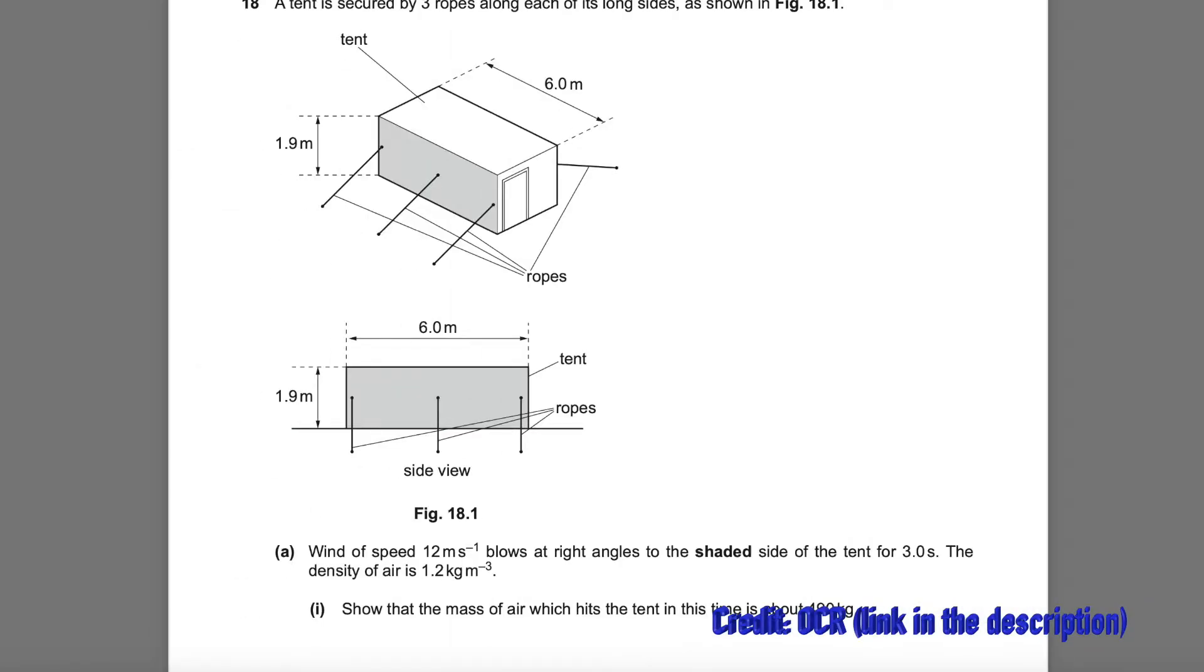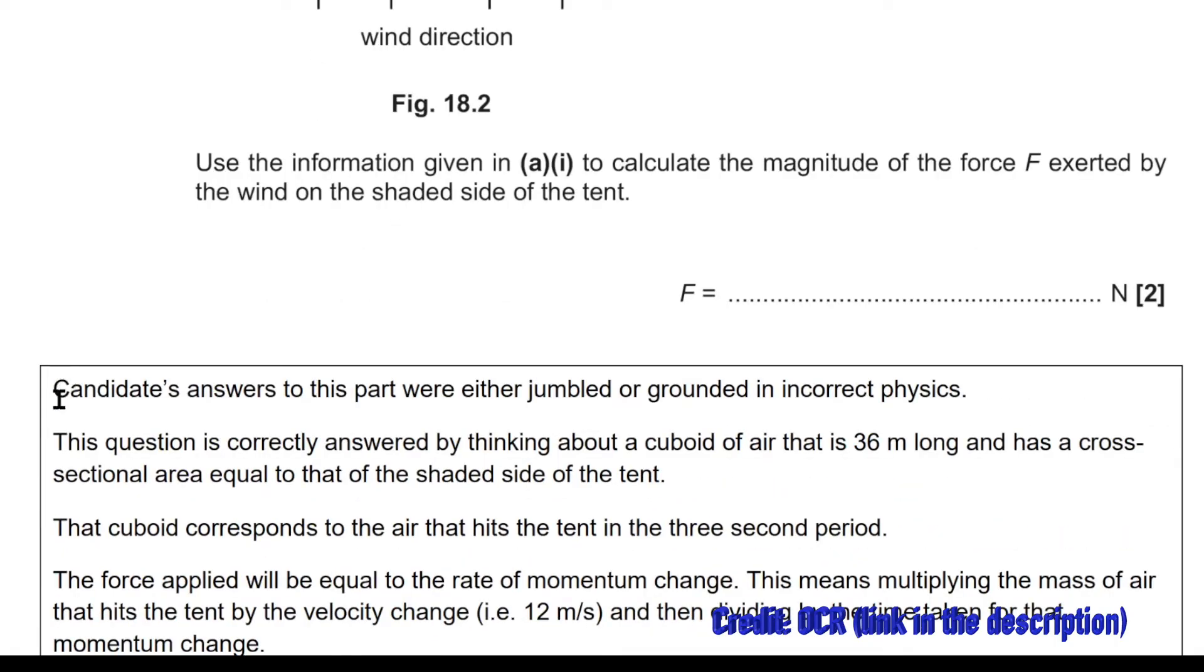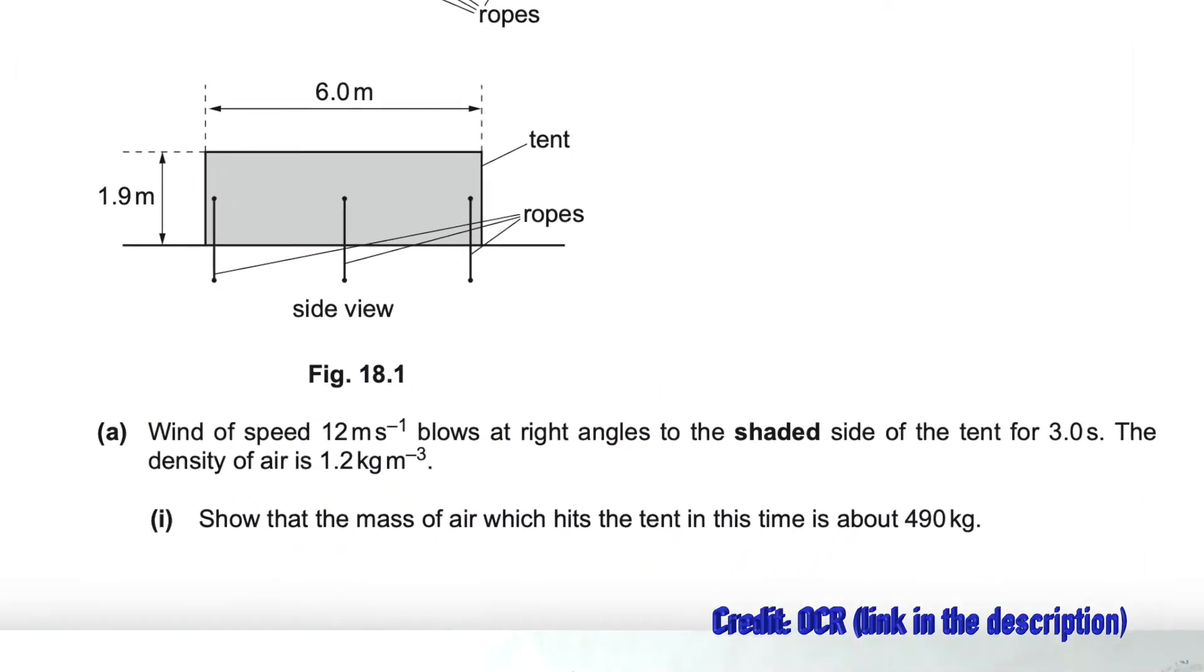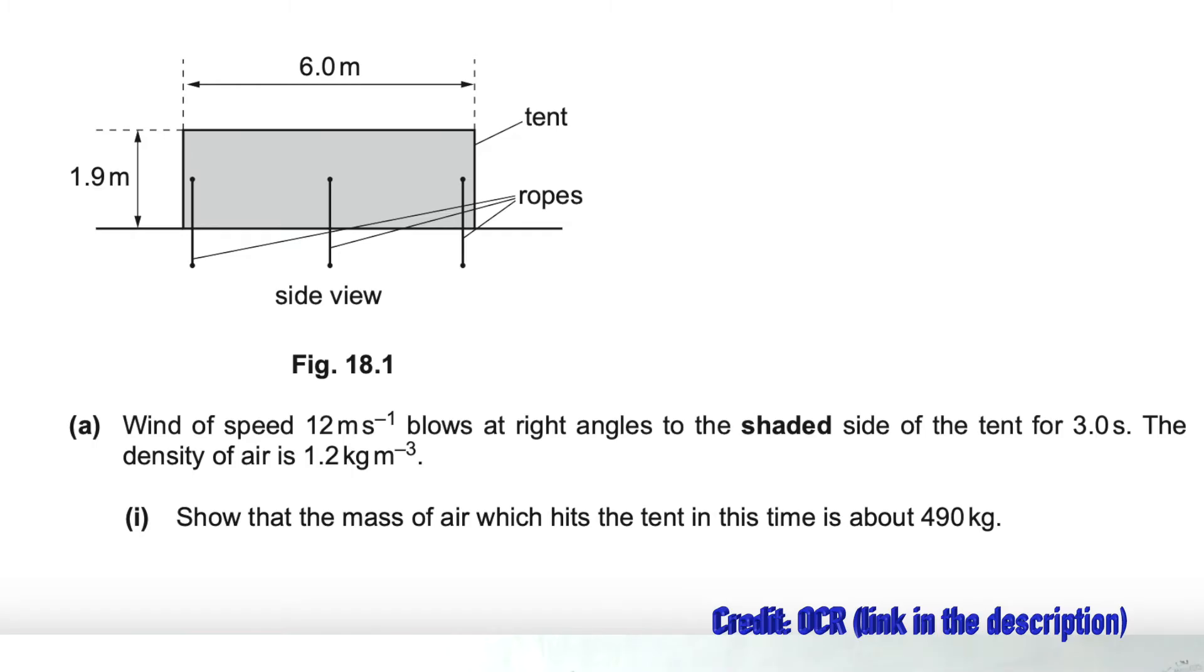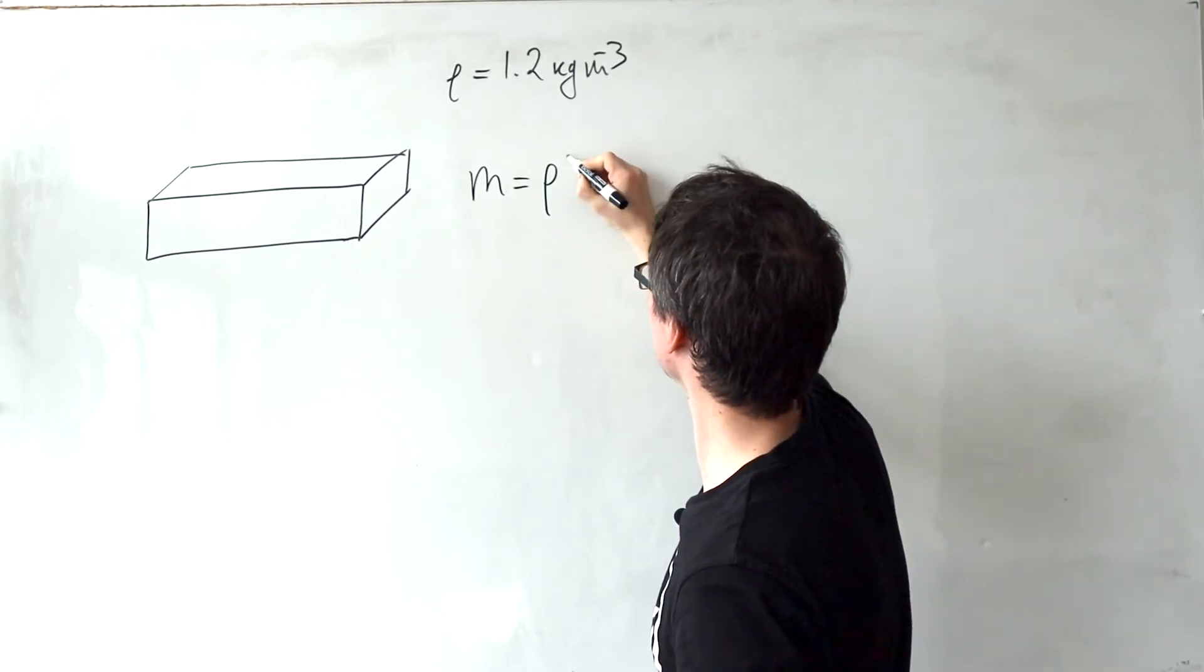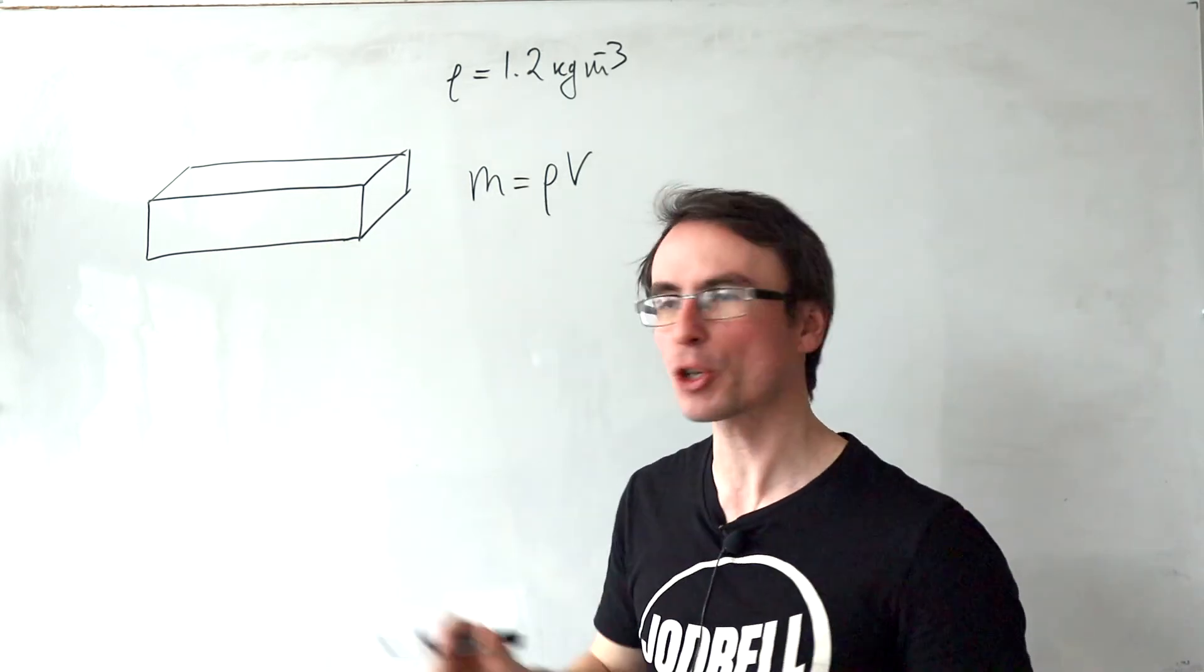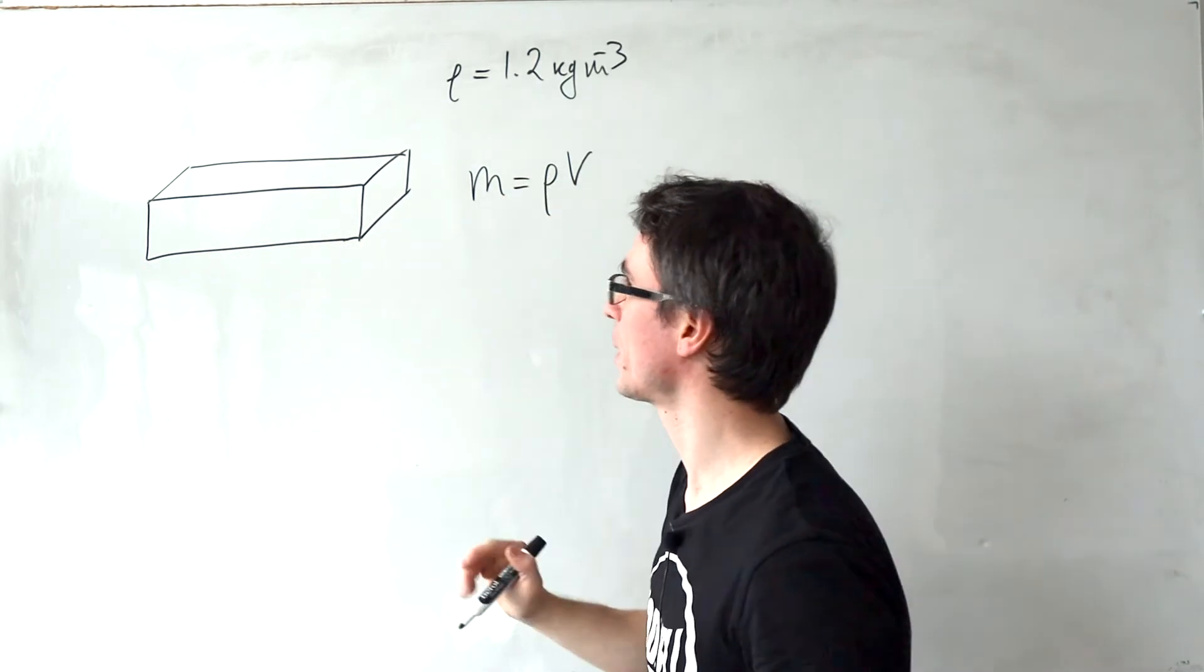This next question about the tent caused quite a few problems when it came out in 2022. Let's even have a look at the examiner's report. The first sentence is really striking. It says that candidates answer to this part were either jumbled or grounded in correct physics. We're given the wind speed blowing at right angles and we need to show that the mass of the air which hits the tent is around 490 kilograms.